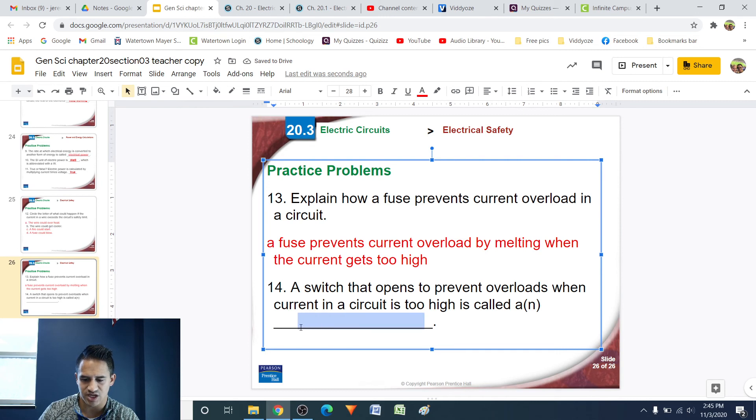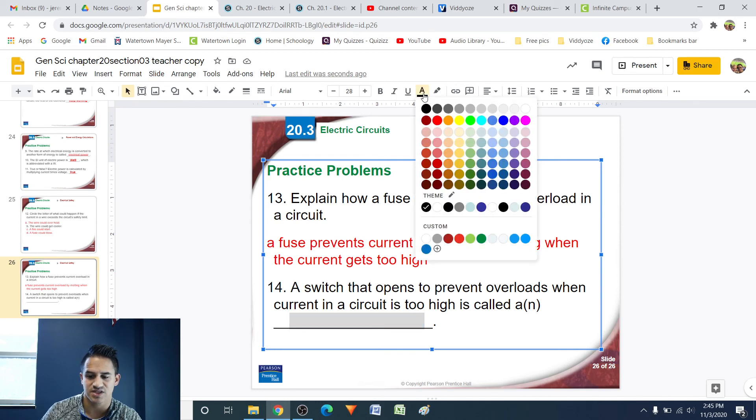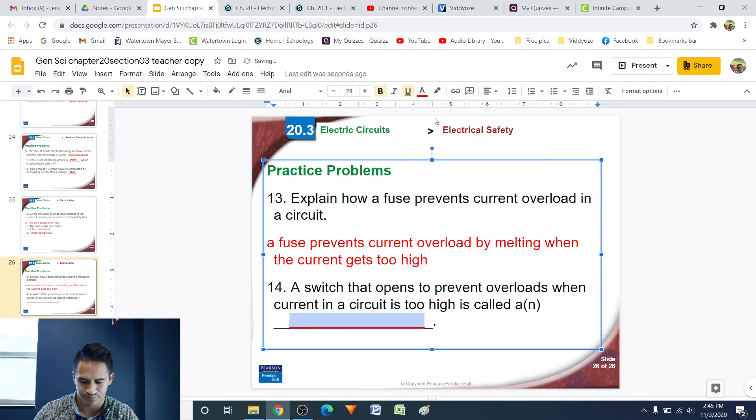Last question. Number 14. A switch that opens to prevent overloads when current in a circuit is too high is called A. So, this is a circuit breaker. The switch, when the current gets too high, it opens up, stops the current, in which case the current doesn't get too high, no fire start.